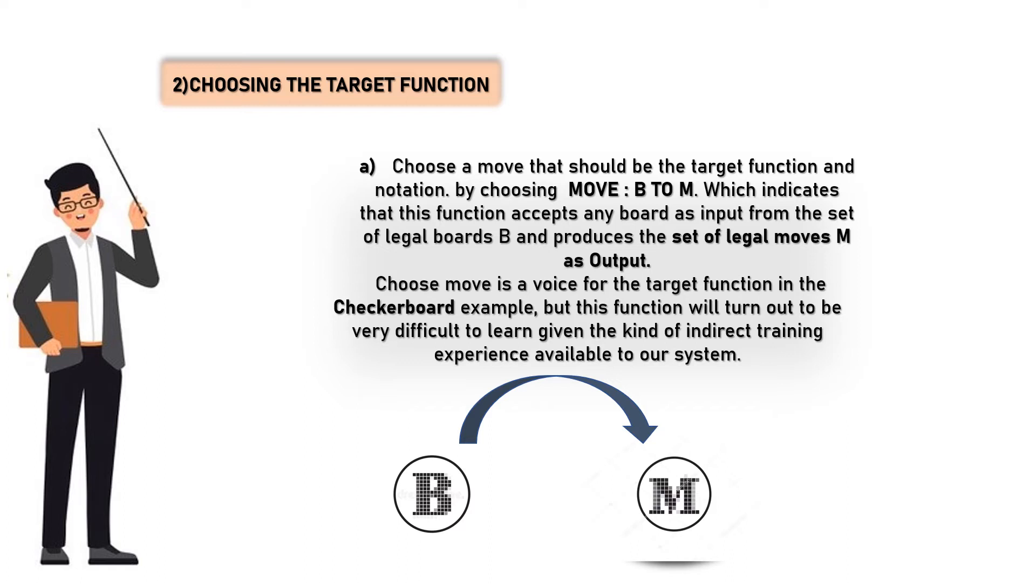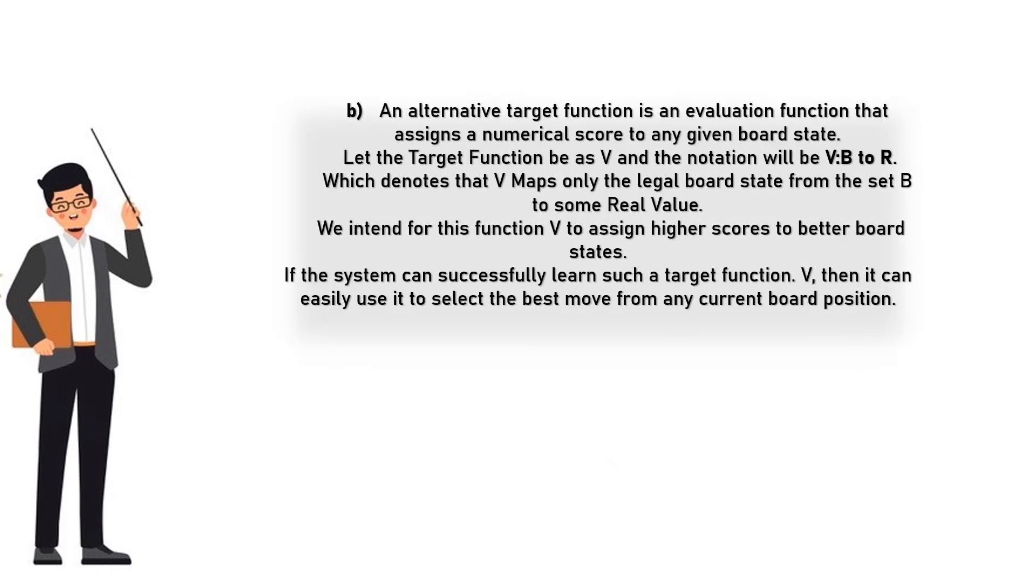Let the target function be V, and the notation will be V: B to R, which denotes that V maps only the legal board state from the set B to some real value.